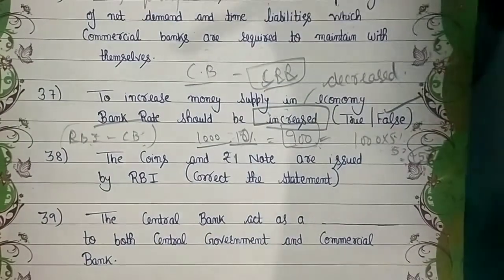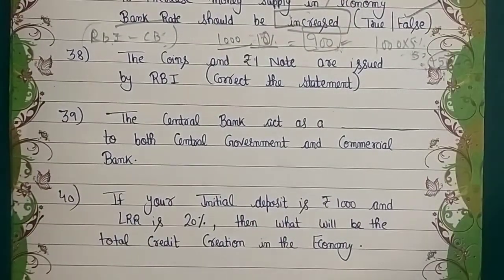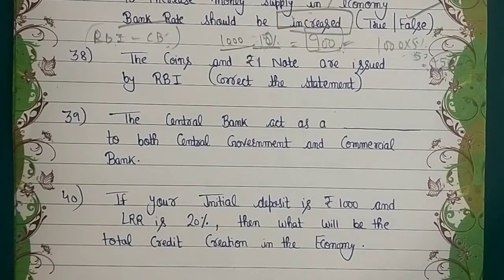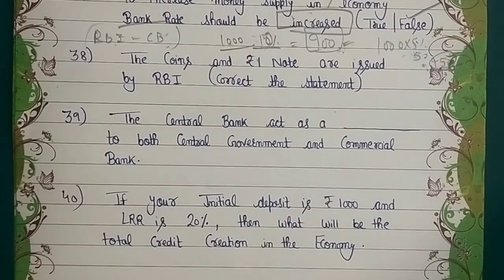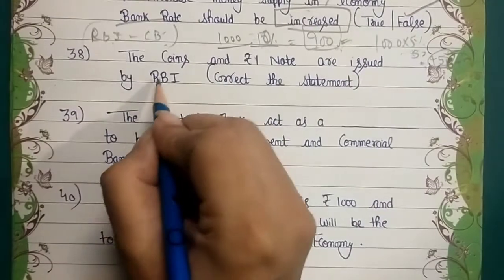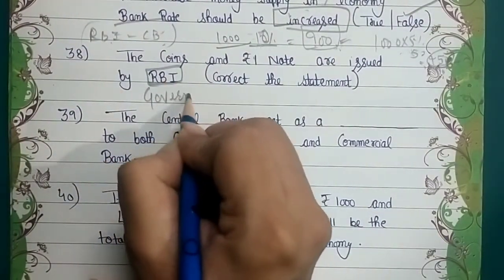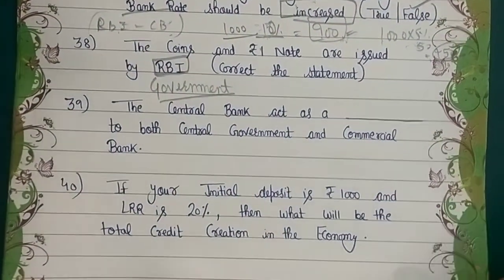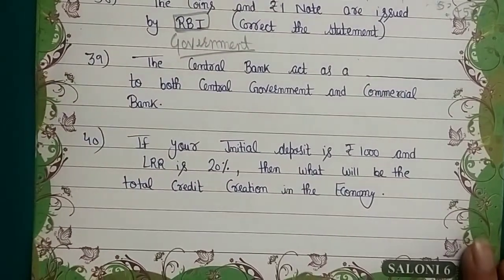Question 38: 'The coins and one rupee note are issued by RBI' — correct this statement. Since it says 'correct it,' the statement is incorrect — that is fixed. The coins and one rupee notes are not issued by RBI. All other currency notes are issued by RBI, but coins and the one rupee note are issued and circulated by the Government of India. I am trying to provide content in every format — MCQ, fill in the blank, correct/incorrect, one word, reasoning assertion — all mixed together.